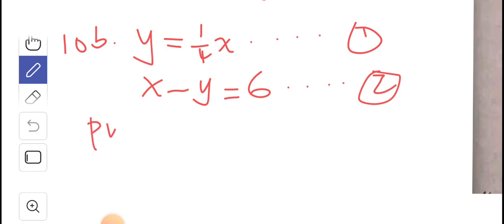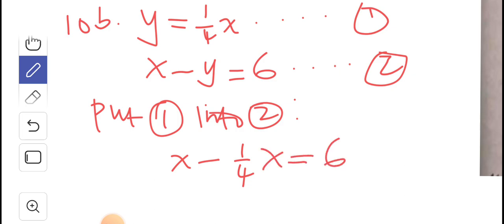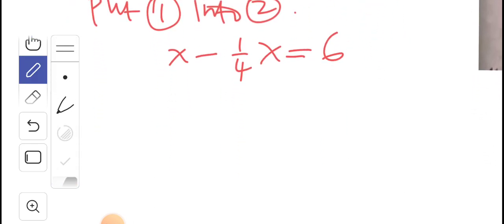And then now you put 1 into 2. And if you do that, put 1 into 2, and then we have x minus 1 quarter, 1 quarter x is equal to 6. And if we continue simplifying this, we're able to get that this is 3 quarters of x is equal to 6.